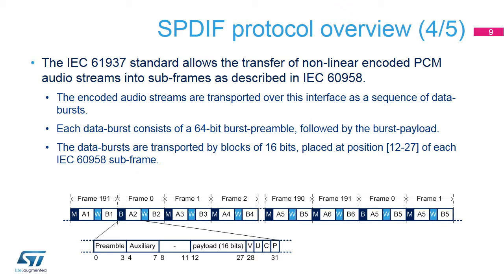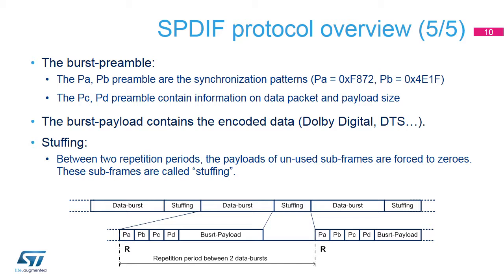The 64-bit burst preamble is a specific pattern located on bits 12 to 27 of four consecutive subframes, used to detect the start of a data burst. Note that the burst preamble (64 bits) shall not be confused with the subframe preamble (4 bits) used to detect subframe and block boundaries. The first 32 bits of the burst preamble are a fixed pattern, PA and PB. The last 32 bits contain information on data packet and payload size. Stuffing is used to adjust the repetition rate of the data burst.